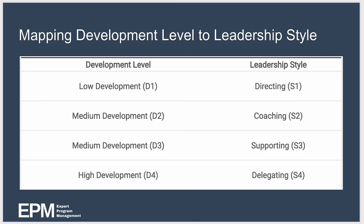Once you've determined the development level of your subordinates, you can use the following table to select the most appropriate leadership style. For example, if your subordinate's development level is D1 you would use a directing style; if it's D3 you would use a supporting style, and so on.